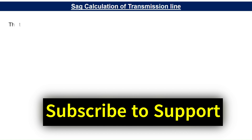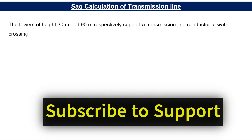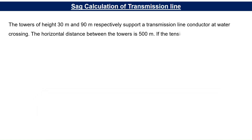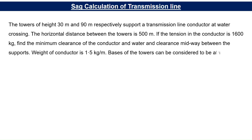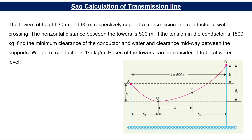The example is: two towers of height 30 meters and 90 meters respectively support a transmission line conductor over water. The horizontal distance between the towers is 500 meters. If the tension in the conductor is 1600 kg, find the minimum clearance of the conductor above water and the clearance midway between the supports. The weight of the conductor is 1.5 kg per meter. The base of the towers can be considered to be at water level.